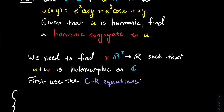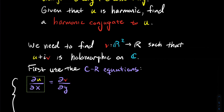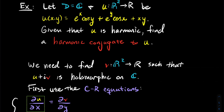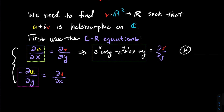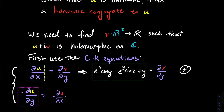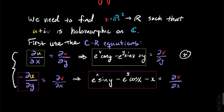We're going to use the CR equations. The first CR equation tells us partial Ux equals partial Vy. You've got a formula for U, so take the partial derivative with respect to x — here's what you should get. I'm keeping that boxed and calling this equation star for reference. The second CR equation is minus partial Uy equals partial Vx. Same thing — take the partial derivative of U with respect to y, and here's what you should get. Let's call this equation double star.